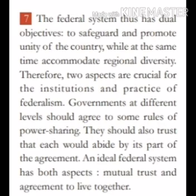It means, federal system mein jo different levels ki government hai, unke beech jo power sharing ke rules hain, un par dono hi levels ki sahmaati honi chahiye. Aur ek doosre par trust hona chahiye ki woh apna apna kaam bahut acche se karenge aur kabhi doosre ke kaam mein koi problem create nahi karenge. Ek ideal federal system mein ye dono aspects hote hain — pehla hai mutual trust, yaani ek doosre par bharosa, aur doosra hai agreement to live together — saath mein rehne ka agreement.